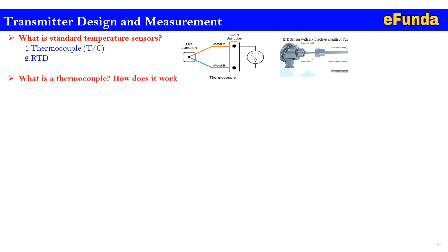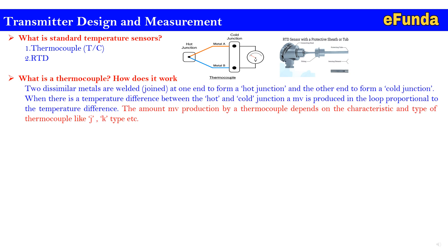What is a thermocouple and how does it work? Two dissimilar metals are welded — joined at one end to form a hot junction, and the other end forms a cold junction. When there is a temperature difference between the hot junction and the cold junction, a millivolt signal is produced in the loop which is proportional to that temperature difference. The amount of millivolt produced by a thermocouple depends on the characteristics and type of thermocouple, like J or K type, varying according to the material used for forming the junctions.